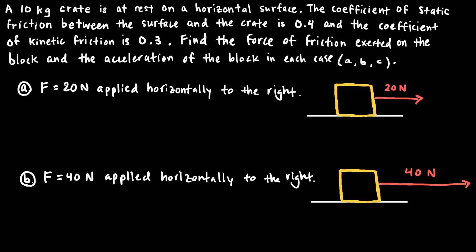The first question you should ask yourself when dealing with either static or kinetic friction is which one should you use? The way you determine that is to see if the force being applied is enough to make the block move. If the applied force is greater than the maximum value of static friction, the block moves and accelerates. If it's equal to or less than that maximum, the block remains at rest. The maximum static frictional force is given by the coefficient of static friction times the normal force.